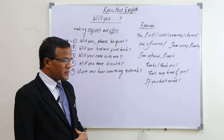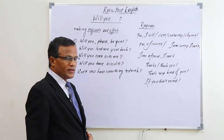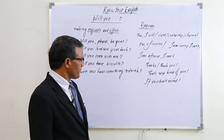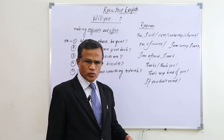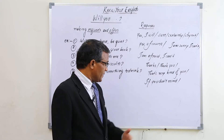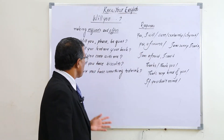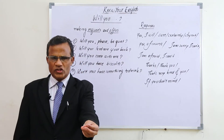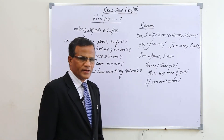Those three sentences were for requests. For offers we also use 'will you.' For example: 'Will you have some biscuits?' — we offer biscuits to others. The response may be 'Thanks' or 'Thank you,' or 'That's very kind of you,' which is equal to 'Thank you.' We can also respond with 'If you don't mind.' Another offer: 'Won't you have something to drink?' means 'Please take something to drink,' and the response is 'Thank you.'